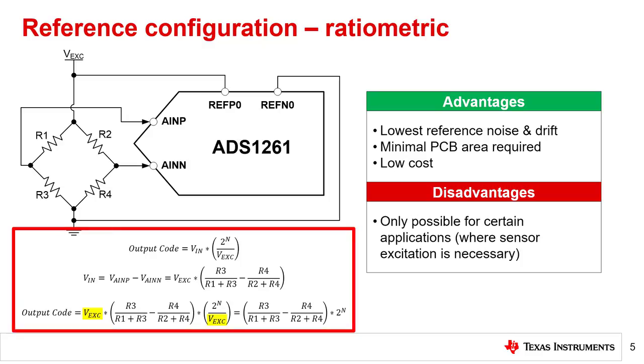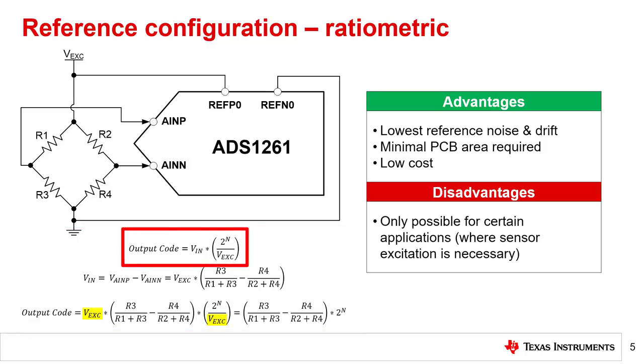To verify this is true, the formulas in the bottom left show that the ADC's output code is proportional to the input signal divided by the excitation voltage. Moreover, the ADC's input voltage, VIN, is the excitation voltage attenuated by a resistor divider.